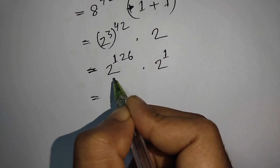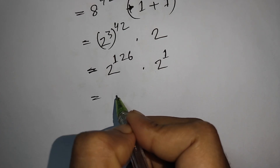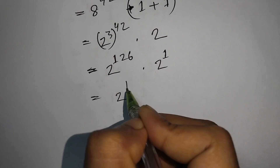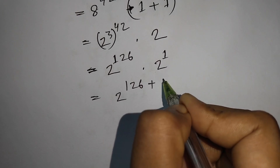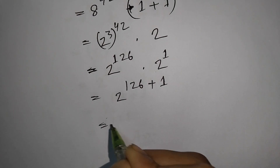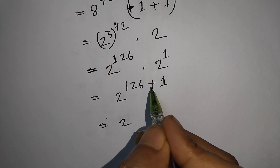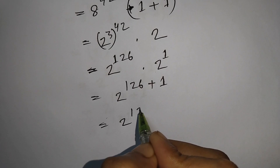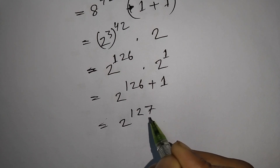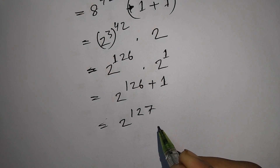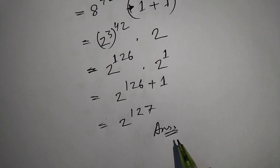Since the bases are the same (both base 2), we add the exponents: 2^(126 + 1) = 2^127. So 2^127 is the correct answer.